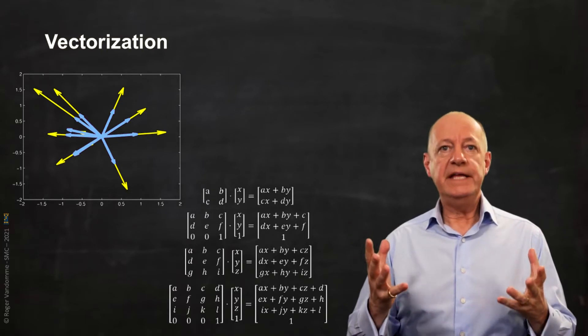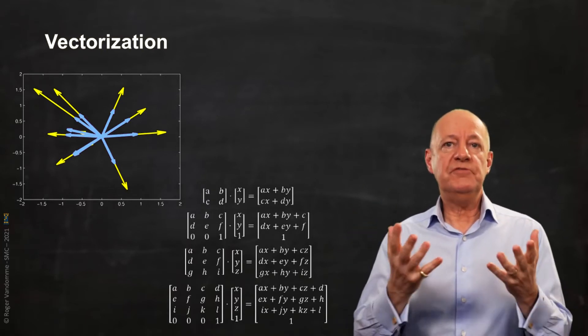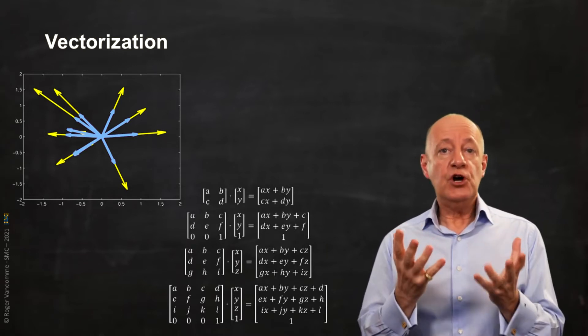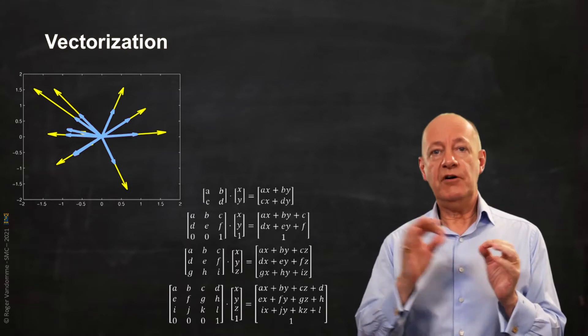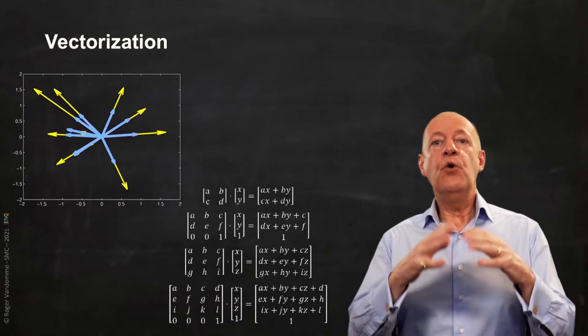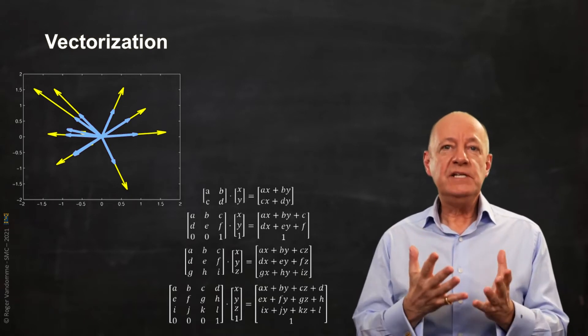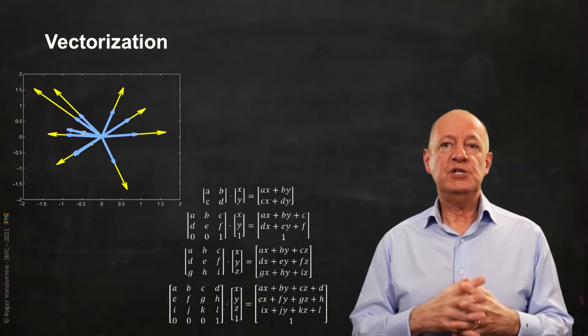This is why we will vectorize our space and use matrix computing in order to facilitate these distance measurements. Each observation becomes a vector and all observations become a matrix which greatly facilitates these distance measurements.